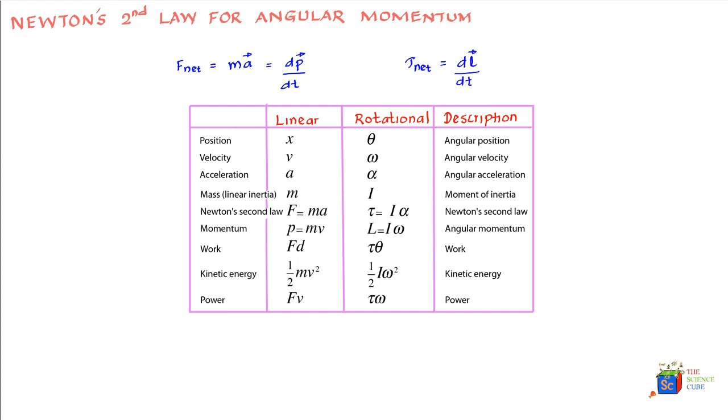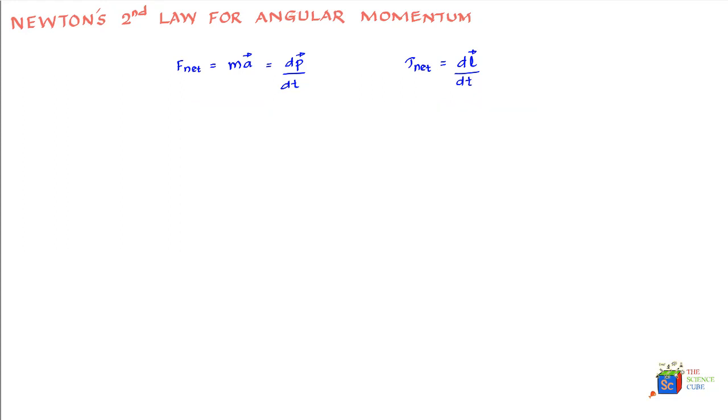Essentially, what we're saying is that the vector sum of all torques acting on a particle should equal the time rate of change of momentum of a particle. So let us go ahead and test whether this equation is true or not.